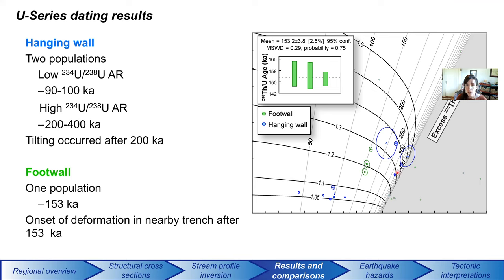The U-series results show two populations in the hanging wall caliche: one population around 200 to 400,000 years and another around 90 to 100,000 years. This gives us an idea that tilting happened sometime after 200,000 years, though the exact age of the deformed caliche is hard to pin down. We'll be conservative and say deformation happened sometime after 200,000 years. The footwall caliche — not deformed at the site of collection but correlated to one in a nearby trench — estimates the age of calcification at around 153,000 years ago, suggesting that deformation of the nearby trench occurred at least after that time.